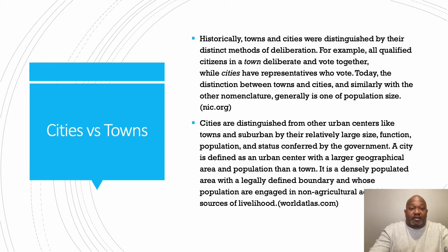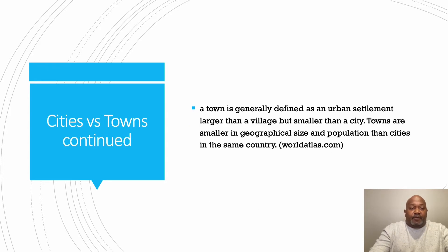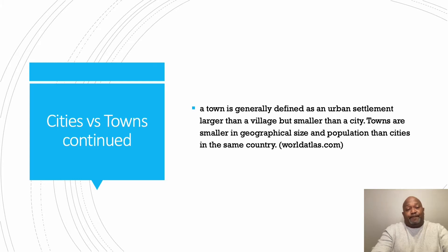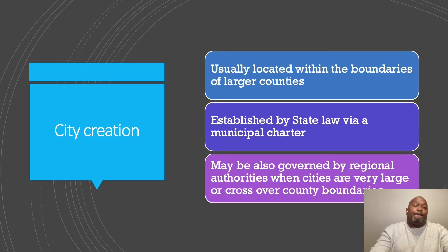A city is defined as an urban center with a larger geographical area and population than a town — a densely populated area with a legally defined boundary whose population is engaged in non-agricultural livelihood. A town, on the other hand, is generally defined as an urban settlement larger than a village but smaller than a city. Towns are smaller in geographical size and population than cities in the same country.